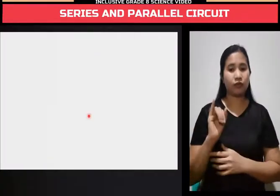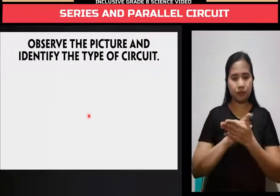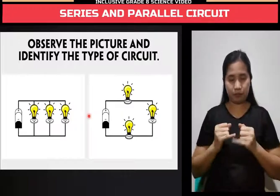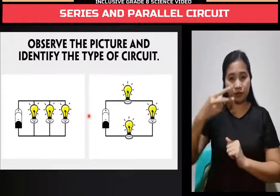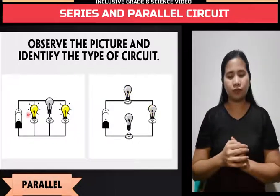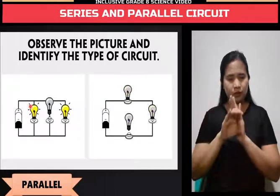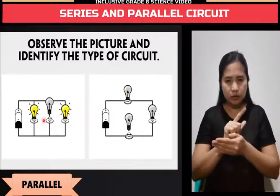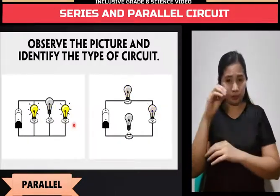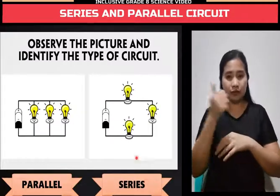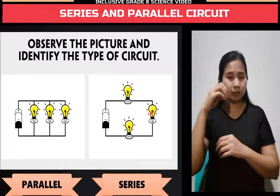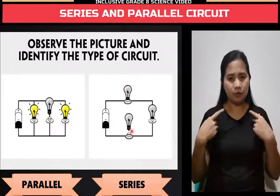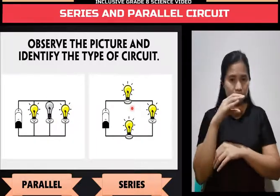Let's go to our lesson. Observe the picture and identify the type of circuit. The first picture is in parallel. As you can see, it is connected along many branches. If one bulb is busted or failed, it does not affect the other bulb. The second one is series — it is connected in a manner such that there is one pathway. If one bulb is busted, the other bulb will not be able to light up.